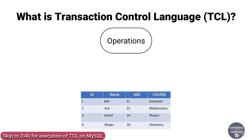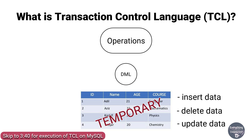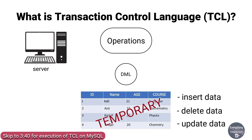When we perform operations on a table with the help of the data manipulation language — that is, if we insert data into a table, delete data from a table, or update data in the table — these operations are not permanent. The changes which happen to the table are temporary and the table on the actual server has not been affected at all. So in order to apply these changes to the table permanently, we have to make use of the TCL commands.